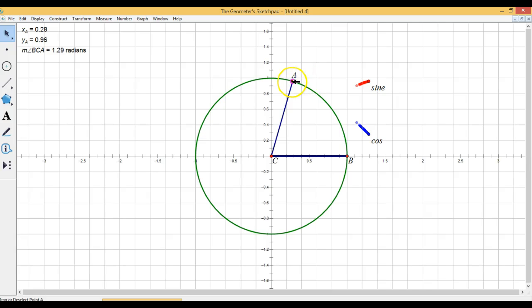obviously the x and y coordinates are changing and the cos is tracking the x coordinate of A and sine is tracking the y coordinate of A and they're moving because on the horizontal axis, we've got the horizontal axis matches the angle that's being made here at the center, BCA.